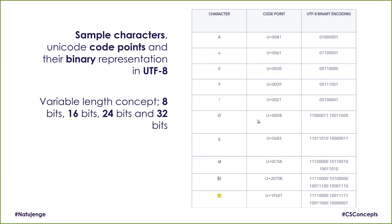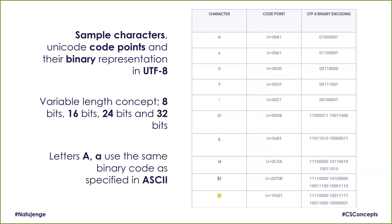If you look at Greek letters, they use two bytes. Some other characters are represented with three bytes, and Chinese characters are represented with four bytes. Finally, emojis are also represented in four bytes. The key point is that letters like 'a' and 'A' have the same binary codes as specified in ASCII — this is what we call backward compatibility.